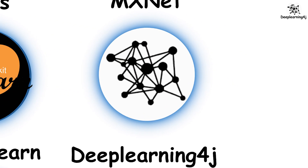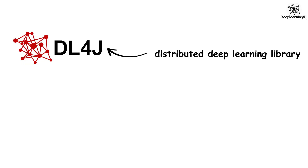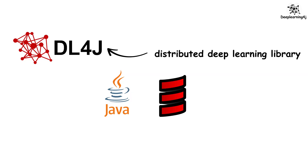DeepLearning4J is the first commercial-grade, open-source, distributed deep learning library written for Java and Scala with a focus on business environments.